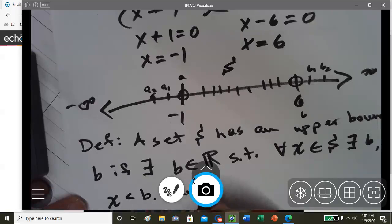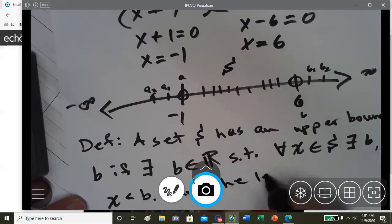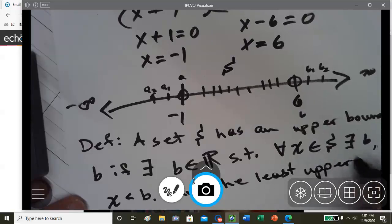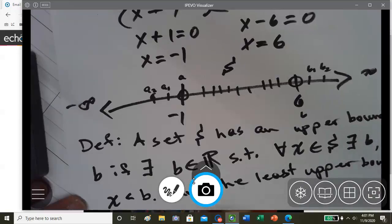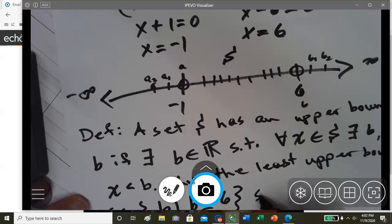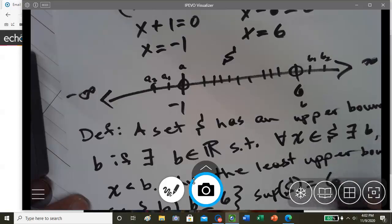Thus the least upper bound is where we have B such that B is greater than or equal to 6. So the supremum for set S is 6.